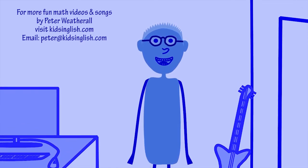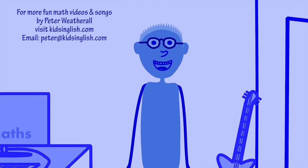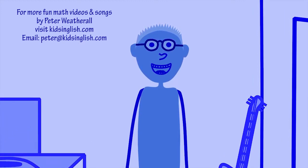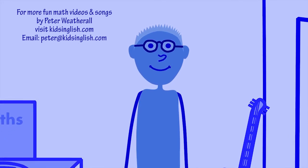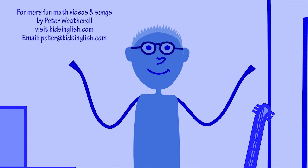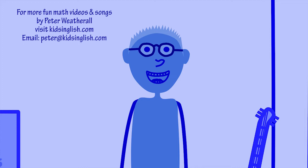To decide which astronaut survives, ground control sets a difficult multiplication problem. The astronaut that solves it first gets to board the escape pod. Electromagnetic interference has rendered your calculator, smartphone and computer inoperable. What are you going to do? Call the multiplication guy.